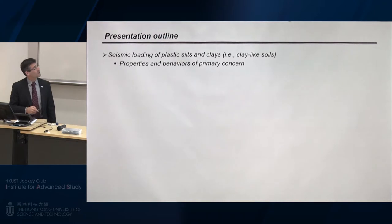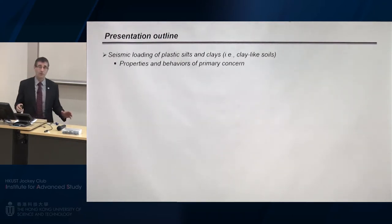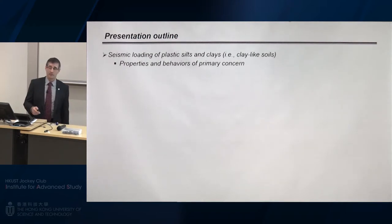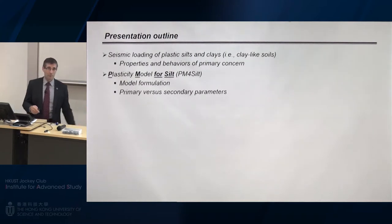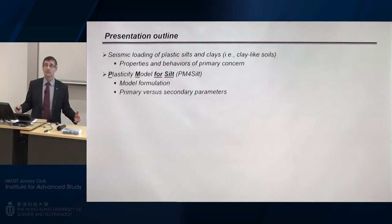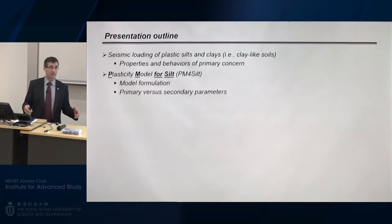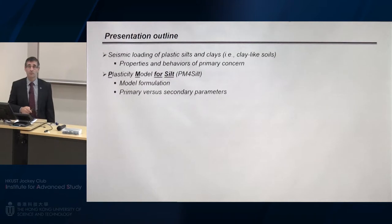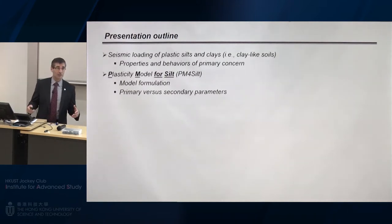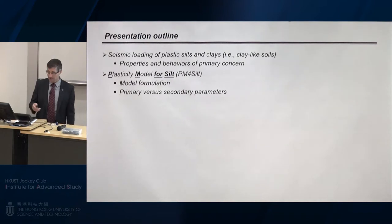In terms of where this talk is going: first, I'll cover the engineering properties that are important to us — what we emphasize when developing and calibrating material models. Then I'll introduce PM4 Silt — the acronym stands for Plasticity Model for Silt. I'll do the model formulation without going through all the equations, since they're rather complicated. Instead, I'll motivate you to want to look at them, and give you a better idea of how the model behaves. I'll discuss the distinction between primary and secondary parameters — the philosophy of how we develop models and make them accessible for use in practice.